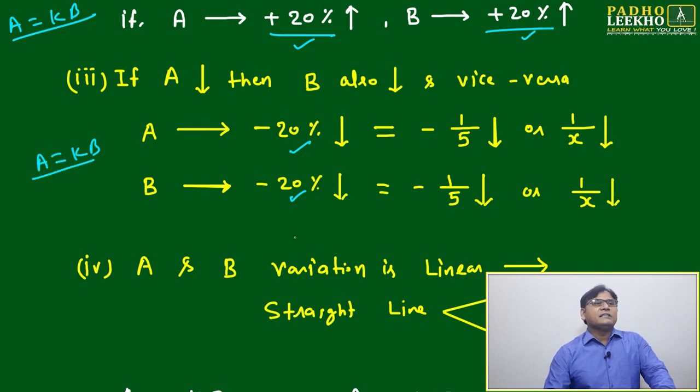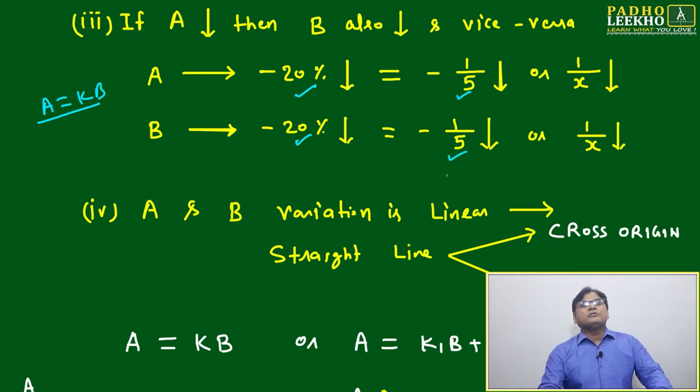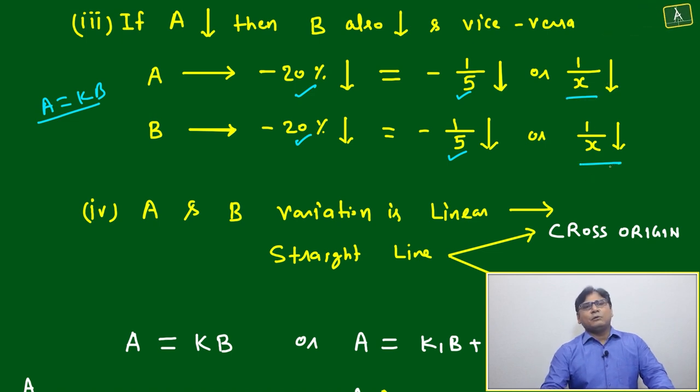The same thing we can understand in different format. Different format means we'll convert the expression of percentage in terms of fraction. 20% we can write as 1 by 5. Means if A is decreased by 1 by 5, B will also decrease by 1 by 5. Or in common we can say, if A is decreased by 1 by x, B will decrease by 1 by x.